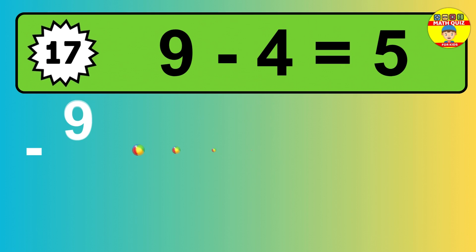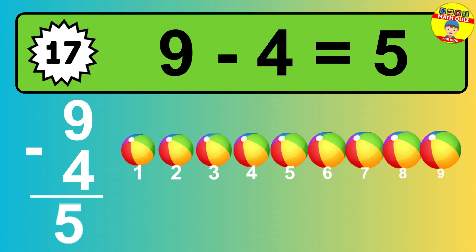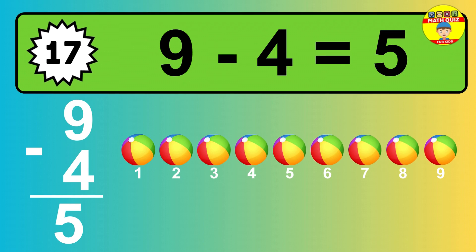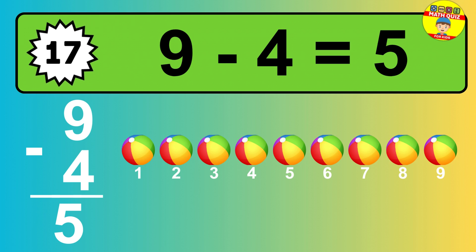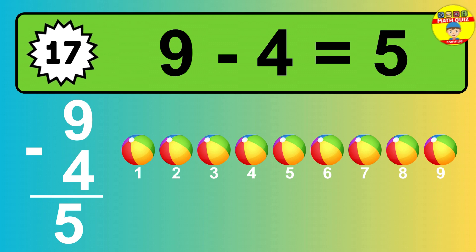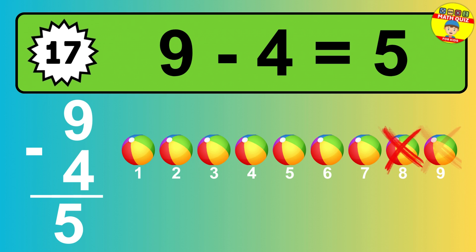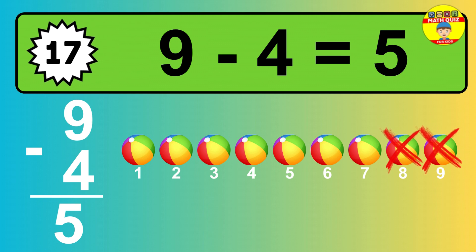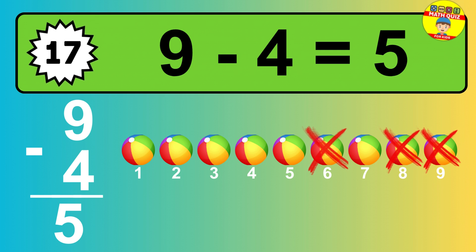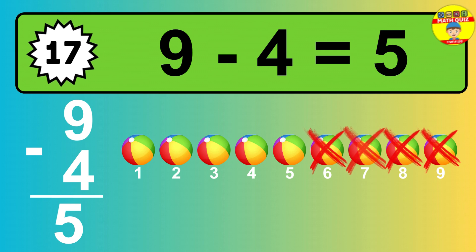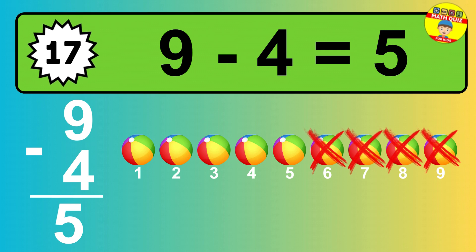Question seventeen: nine minus four equals what? So the answer is, nine minus four is five. Let's count it. One, two, three, four, five.